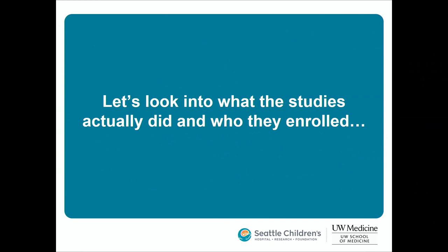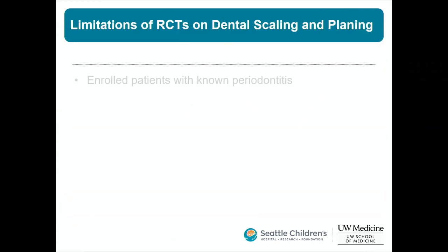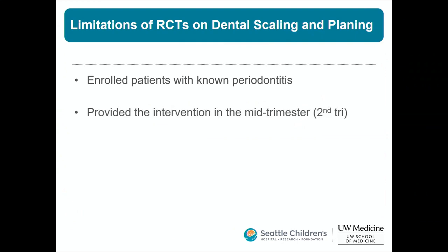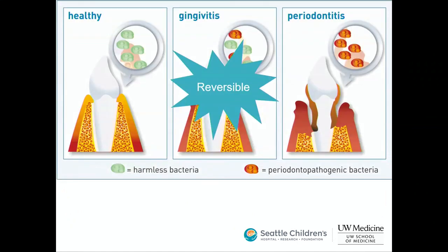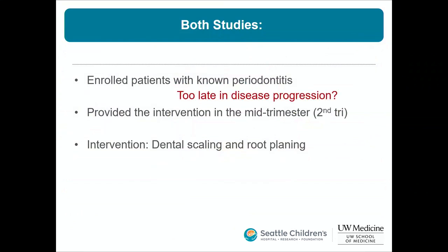Looking at what those studies actually did: they enrolled patients with known periodontitis, provided intervention in the second trimester, and used dental scaling and root planing. The most reversible phase is gingivitis — once you reach periodontal disease with bone resorption and tooth loss, it's much more irreversible. Maybe enrollment happened too late in disease progression.